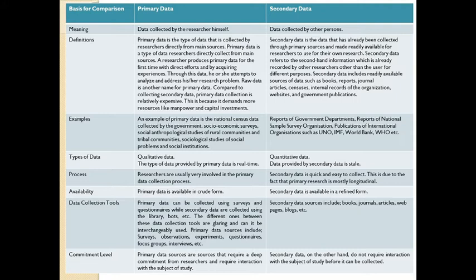Regarding types: primary data is mainly qualitative and real-time data, whereas secondary data is mainly quantitative and considered stale. Regarding process: researchers are usually very involved in primary data collection, whereas secondary data is quick and easy to collect since primary research is mostly longitudinal. Regarding availability: primary data is available in crude form, whereas secondary data is available in refined form. Regarding data collection tools: primary data uses surveys and questionnaires, while secondary data uses libraries and published sources.